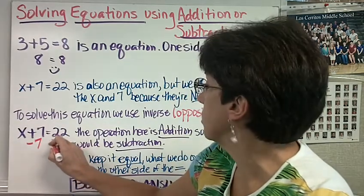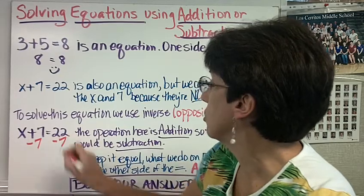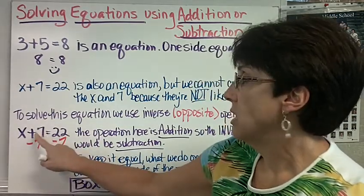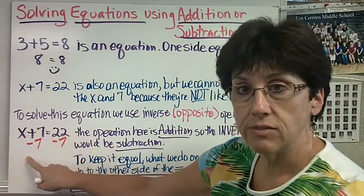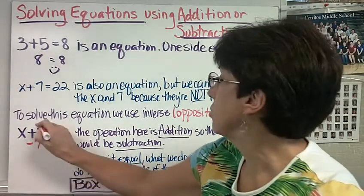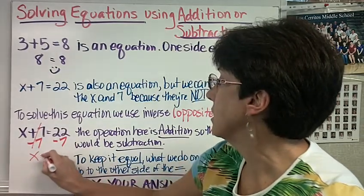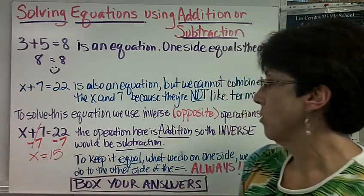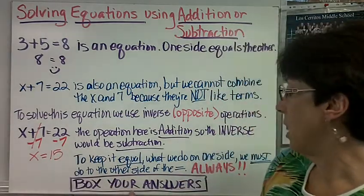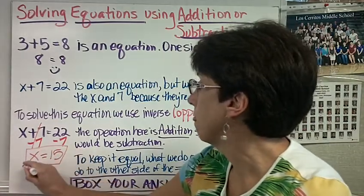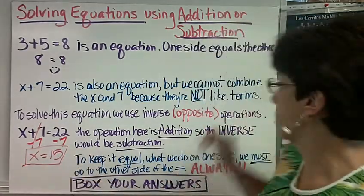I'm going to subtract 7 under the 7 and 7 under the 22. Now, you know positive 7 plus negative 7 is 0. That's the additive inverse. I'm going to cross this out. x equals 15. I'd also like you to box your answers, please. Let's see what else we have.